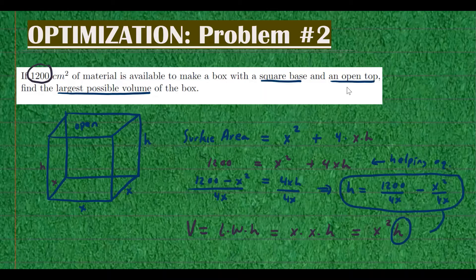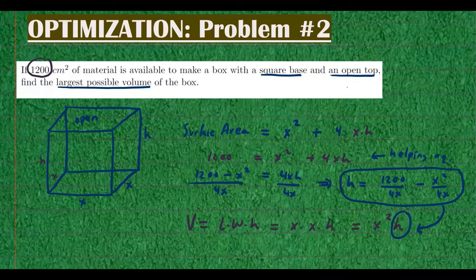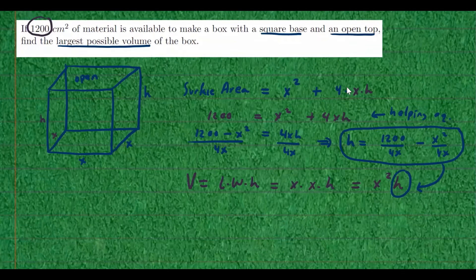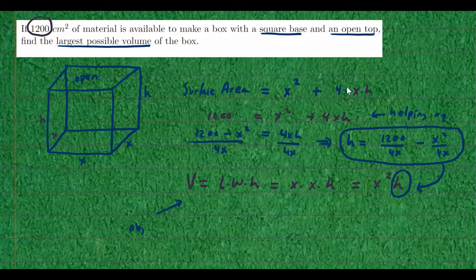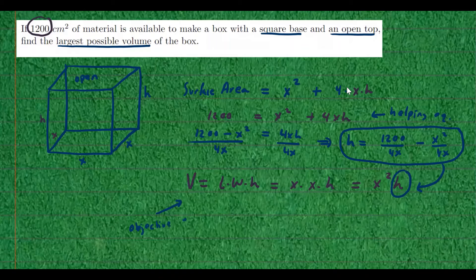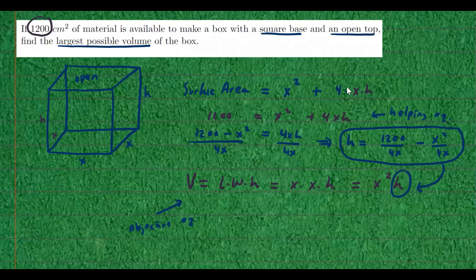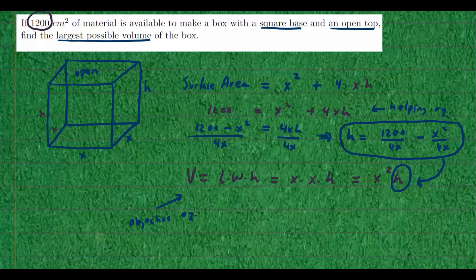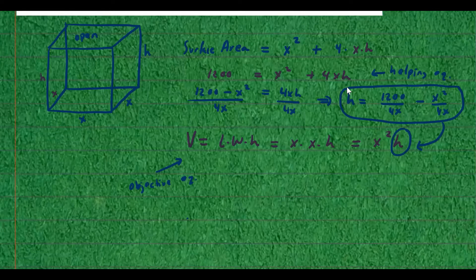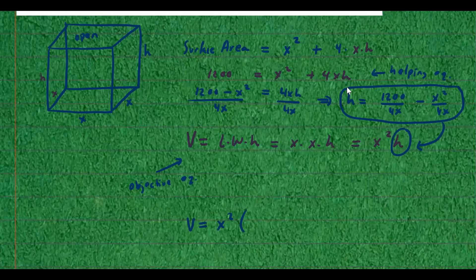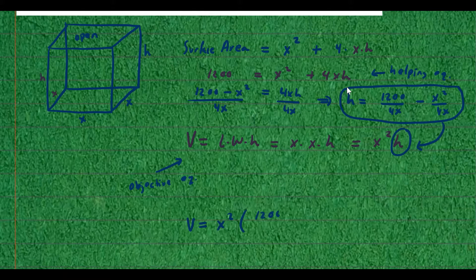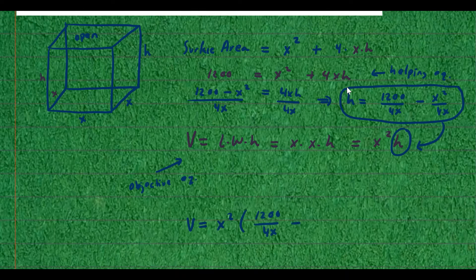And now I can simply take this and plug it in here. Then I can take the derivative. So I use my helping equation with my objective equation. So this is known as the objective. So we have volume equals x squared times h, which is 1,200 over 4x minus x squared over 4x.